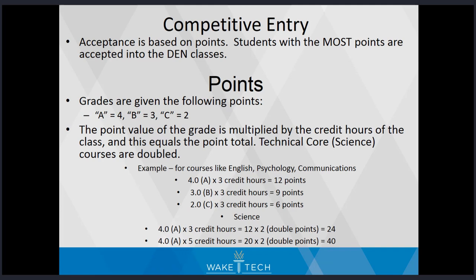For courses like English, Psychology, and Communications, the highest points for an A is 12 points; for a B it is 9, and for a C it is 6 points. For sciences, the highest for an A in a 3-credit science course is 24 points, and the highest points for a 5-credit science course is 40 points.